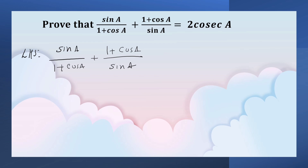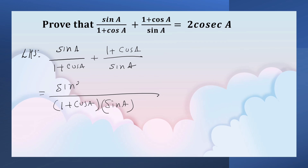Now, let us take the LCM. The LCM here is 1 plus cos A into sin A. So here we get sin square A plus 1 plus cos A, the whole square.